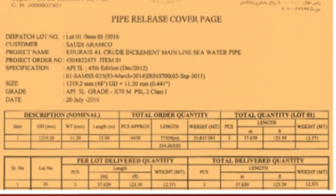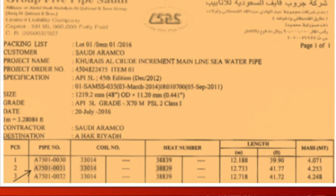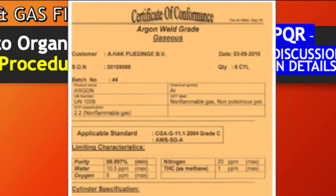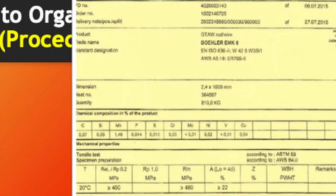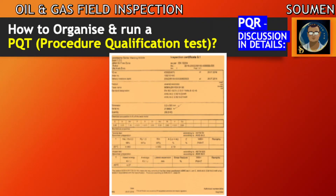This is a sample MTC for the pipe — we need to verify the heat number and the material contents. You can see the arrow marking the actual pipe number used during the test. This is the argon gas certificate showing a purity of 99.997%. The final attachment is the welding consumable certificate: ER70S6 for the root filler, and E8018-C1H4R for the low-hydrogen fill and capping passes.